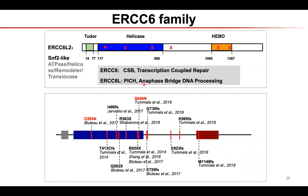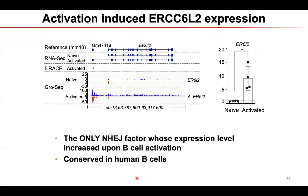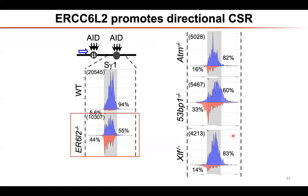When we started working on this gene in 2017, there wasn't much known about its function. It belongs to the ERCC6 family — ERCC6 is also called CSB and is involved in transcription-coupled repair, and ERCC6L is called PICH and is involved in mitotic chromosome segregation. The only thing known about ERCC6L2 at that time was that it's mutated in bone marrow failure patients. Interestingly, when we looked at naive versus activated B cells, this gene's transcription level is dramatically induced upon B cell activation.